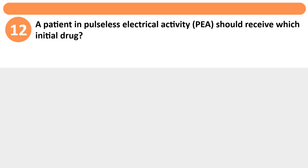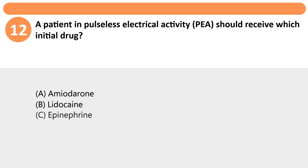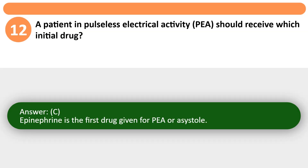A patient in pulseless electrical activity (PEA) should receive which initial drug? A. Amiodarone. B. Lidocaine. C. Epinephrine. D. Adenosine. Answer: C. Epinephrine is the first drug given for PEA or asystole.